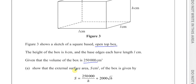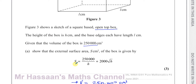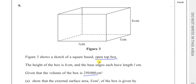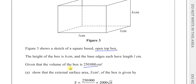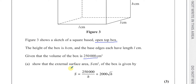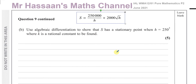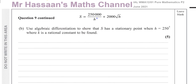Even if you did not get part A, you do not need it to answer part B. Never look at part A, say you can't do it, and throw away the rest of the marks. Part B is worth five marks — you can get those marks without knowing how we derived part A, because all we need is to differentiate the expression they showed us.